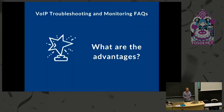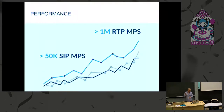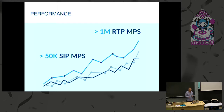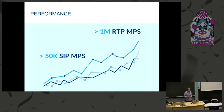The first advantage of SIP3 is performance. From the very beginning we built a highly scalable system capable of handling huge volumes of traffic. Our latest benchmarks show that on a single server we can handle 50,000 SIP messages per second and more than 1 million RTP messages per second — and this is entirely scalable architecture.